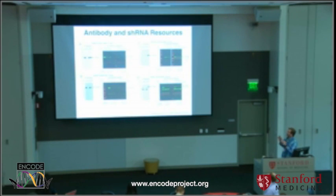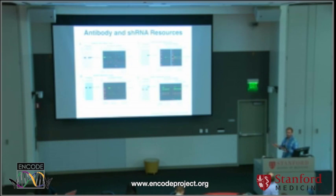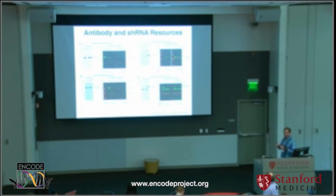Just like the antibodies where there's a gradient of how well things work, the shRNAs also have a gradient. Some work extremely well and deplete the protein very well; others don't work at all. Some proteins, even after trying 10 or 12 shRNAs, can't be depleted. For those, we're actually shifting to using CRISPRs to knock those out.